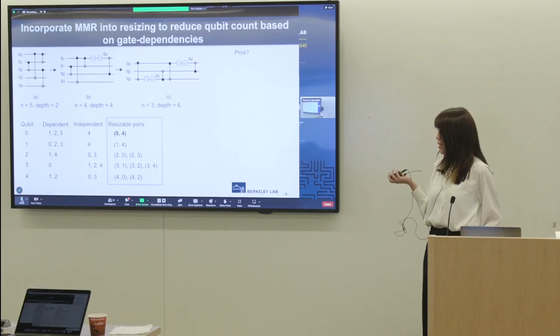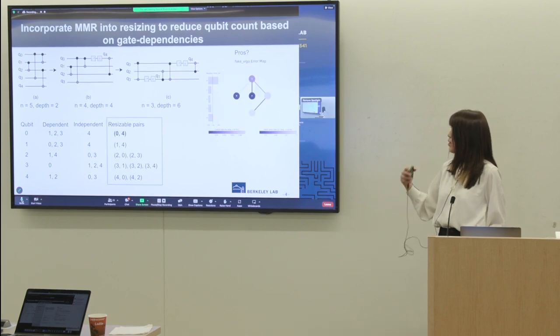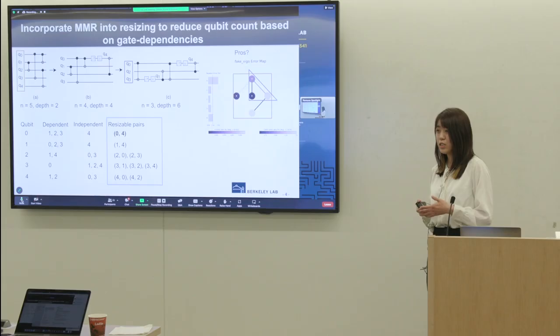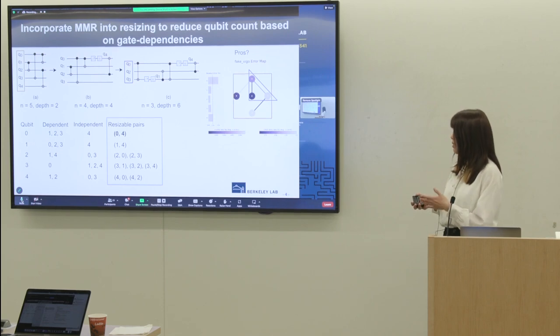So what's the benefit of this technique? Let's say we want to execute this circuit on this quantum hardware. At the beginning, we need all the five qubits, but in the end, we only need three qubits here. For quantum hardware, the number of reliable qubits is limited. So if we use less number of qubits, we can choose the qubits with higher fidelity. So if we run the circuits on the hardware, the results will be better. And also, since the hardware has nearest neighbor connectivity, using less number of qubits can relieve the architecture constraint.